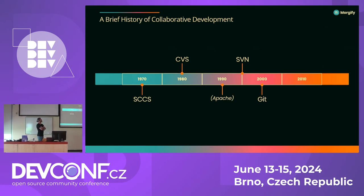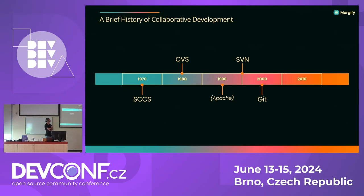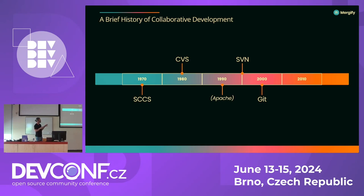Version control systems. In the 70s, Bell Labs — those who built the Unix system — came up with their own version control system called SCCS, that stands for Source Code Control System. It's a simple software that allowed going back to a previous version of a file. Later, in the 80s, came CVS for Concurrent Version System. It's a client-server software, so it allowed developers distributed across the world to work on the same code base. It became really popular, and thanks to CVS, one of the most popular web servers was developed — the Apache web server in the 90s.